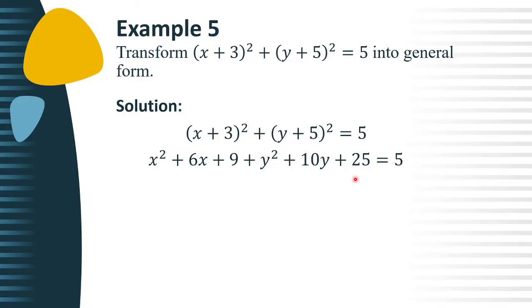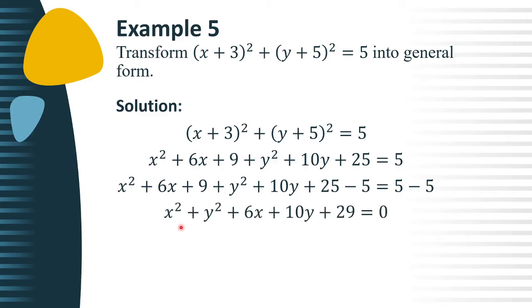Next, subtract 5 from both sides of the equation. So we have x² + y² + 6x + 10y. For the constants, 9 plus 25 is 34, minus 5, that is positive 29.